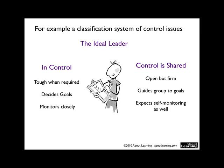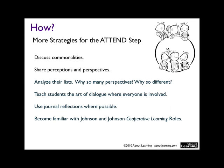For example, you may have just had an experience of ideal leadership where one leader who played the part was in total control and the other leader who played the part was sharing control, and then you would ask them to classify the negatives and positives of both types of leadership. You could discuss commonalities, you could share perceptions and perspectives. These are all strategies that you can use in this Quadrant 1 left-mode step. They can analyze their lists — why are there so many different perspectives? You're teaching students the art of dialogue where everyone is involved.